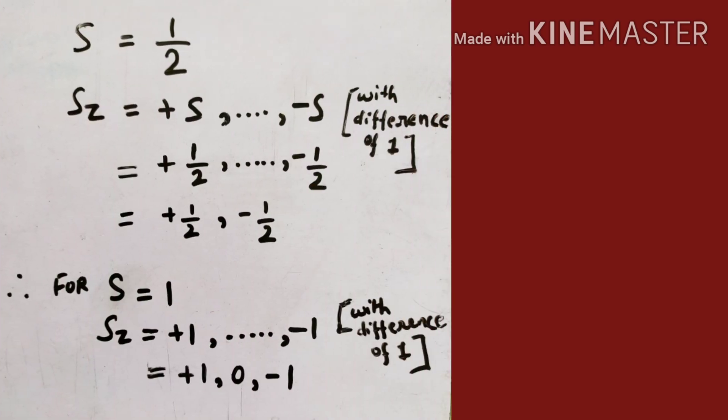For a particle with spin-1/2, there can be two states or two Z-components: plus-1/2 or minus-1/2. The particle can either be spin-up (plus-1/2) or spin-down (minus-1/2). For a particle with spin s = 1/2, the Z-components range from plus-1/2 to minus-1/2 with a difference of 1, giving two states: plus-1/2 and minus-1/2.